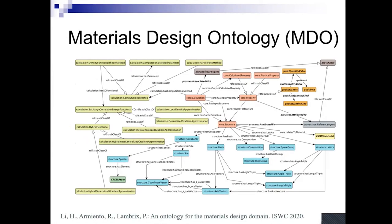Here is an example of an ontology that we developed that aims to represent essential terminology regarding materials design. There are some core concepts in red, such as calculation, property, and structure. There are some concepts related to computation, such as different computational methods, some concepts related to structure, and then some related to provenance. Further, there can be relationships between concepts — for instance, a relation 'has output structure' between a calculation and a structure. There are also axioms, in this case to represent ISA relations, where we have a hierarchy of different computational methods.